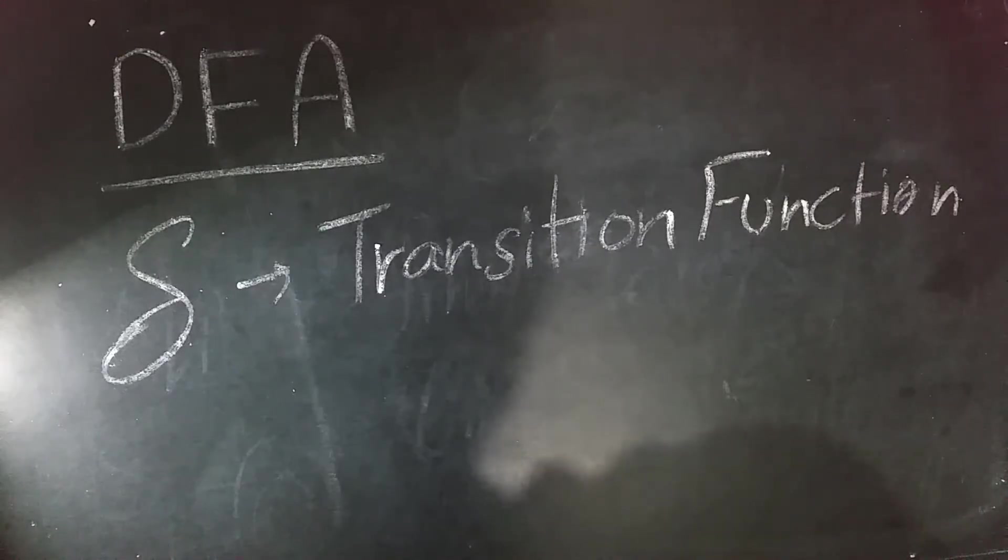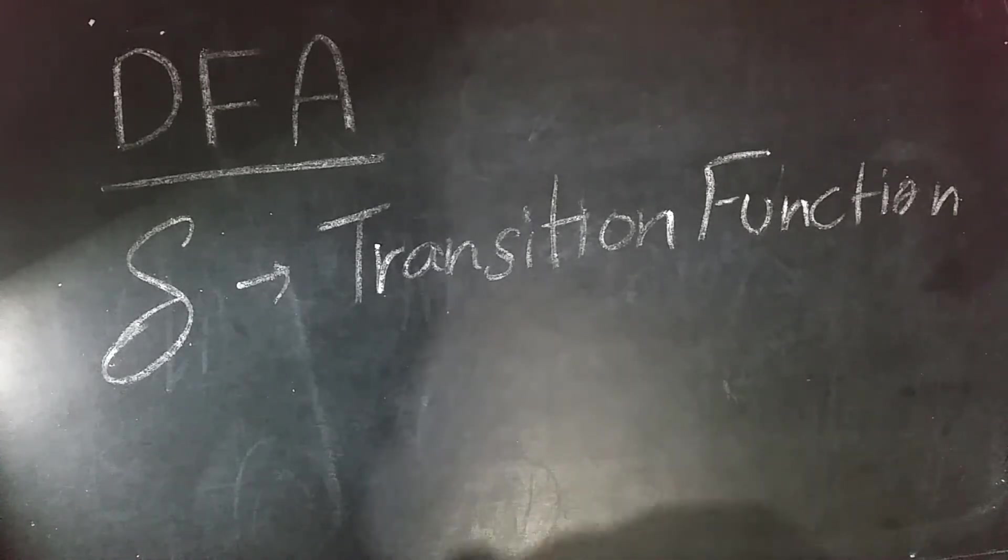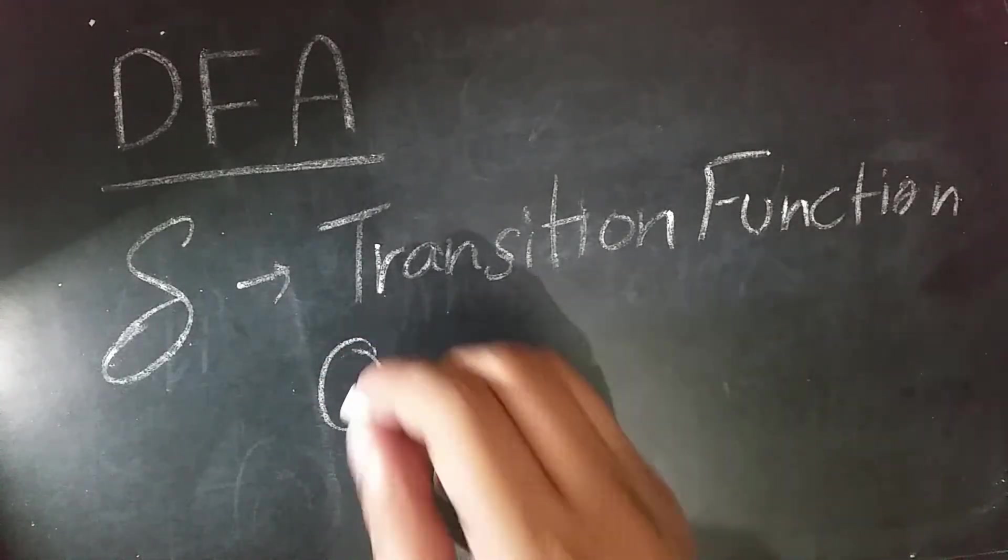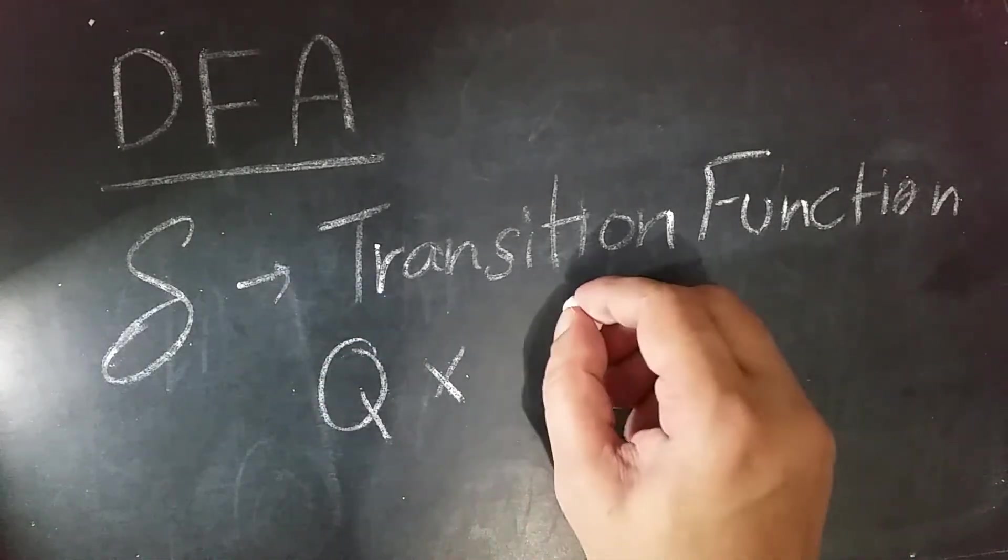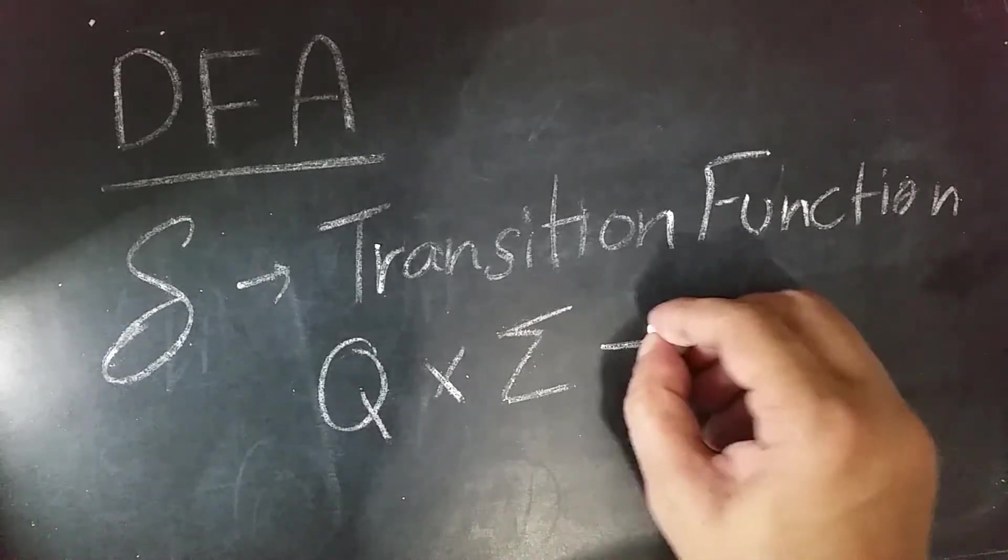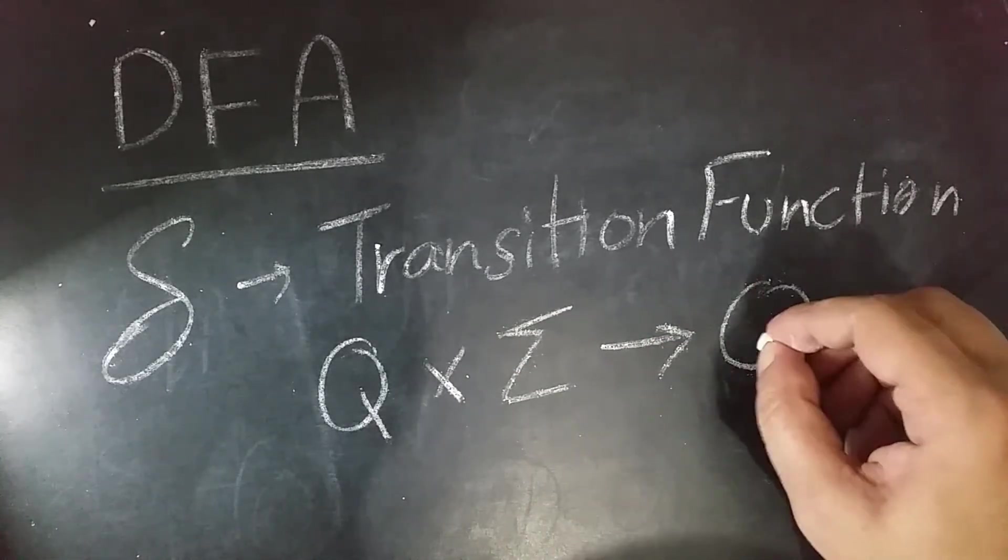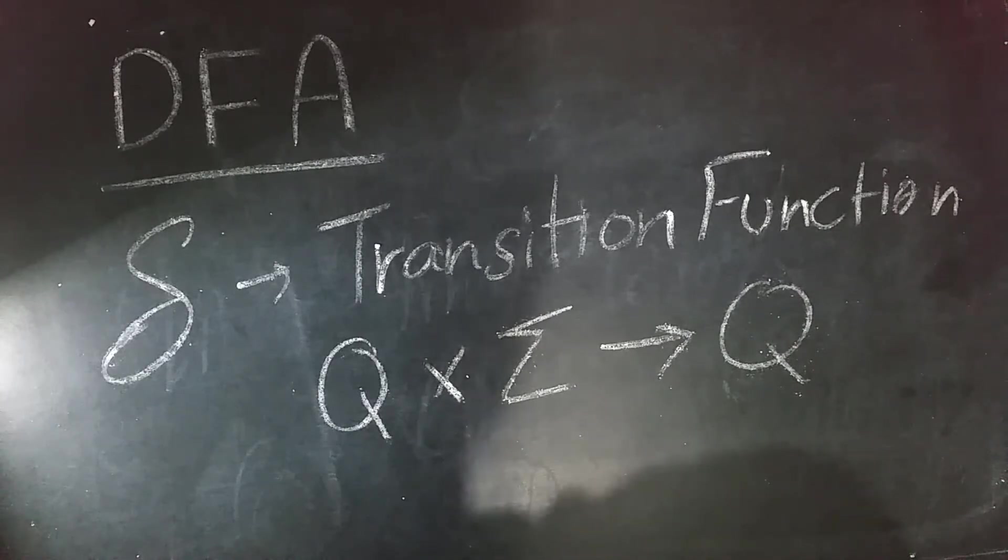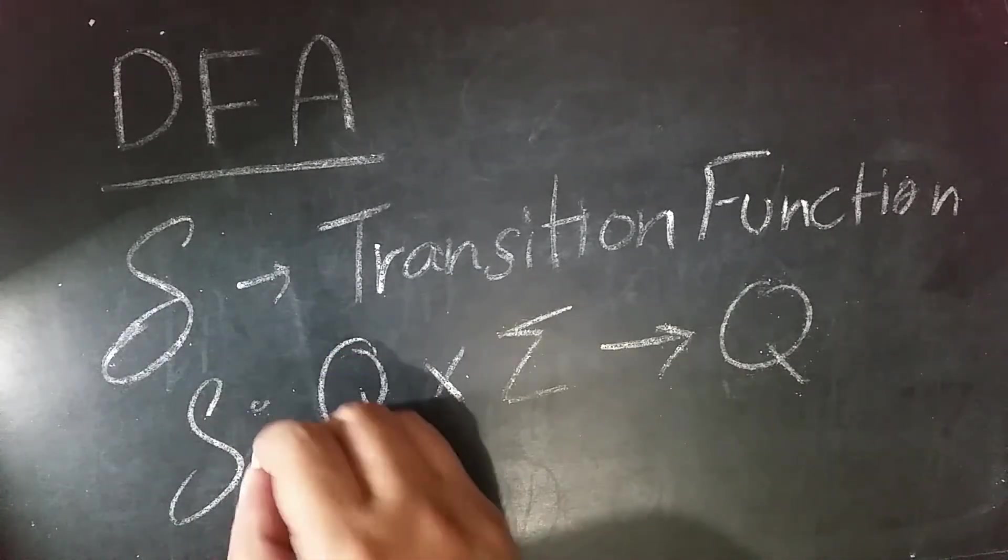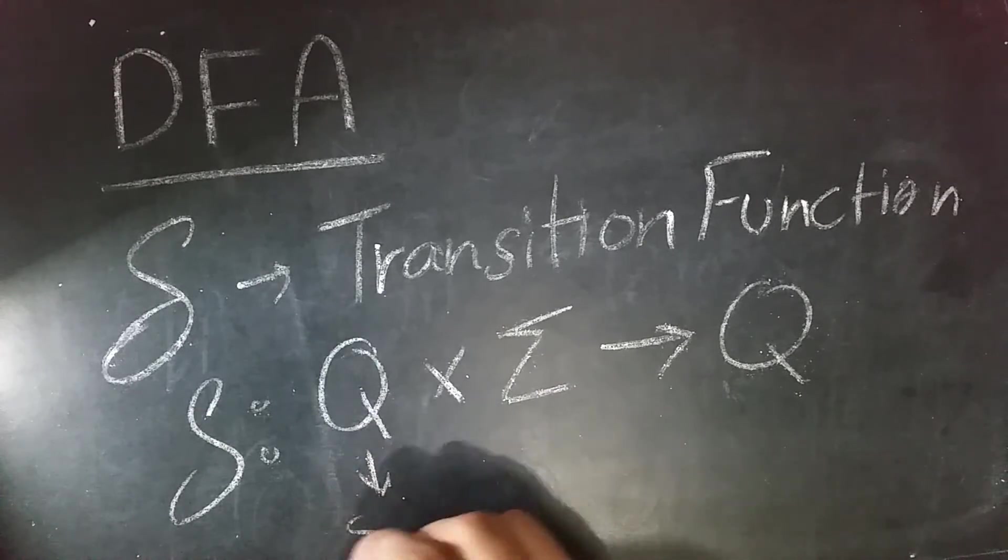The last is delta, which represents a transition function that maps at what state and at what symbol the machine would transition to the next state. For every state, we give an input symbol and it will take us to a new state. This is a transition function, and every state